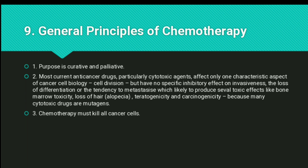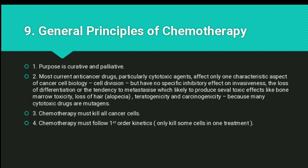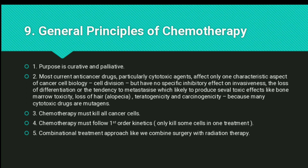Chemotherapy must kill all cancer cells, because if even a single cell remains, it can divide into thousands of cells rapidly. Chemotherapy also follows first-order kinetics — only some cells are killed in one treatment session, and the remaining ones are killed in subsequent sessions. A combinational treatment approach, such as combining surgery with radiation therapy, is also commonly used — doctors often prefer radiation first, followed by surgery.